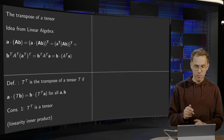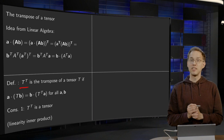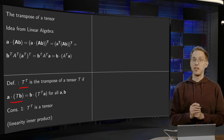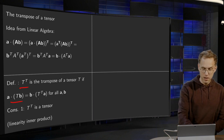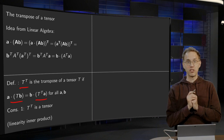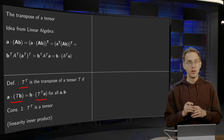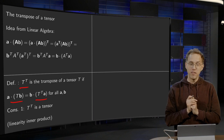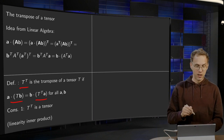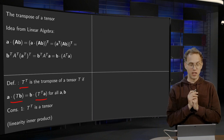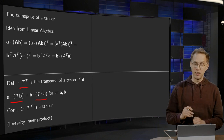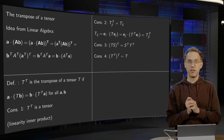The transpose T transpose of a tensor T is defined as: A inner product T times B equals B inner product T transpose times A, for all vectors A and B. This looks a bit odd, of course, but this completely fixes the transpose of T. We can see that T transpose is indeed a tensor due to the linearity of the inner product.